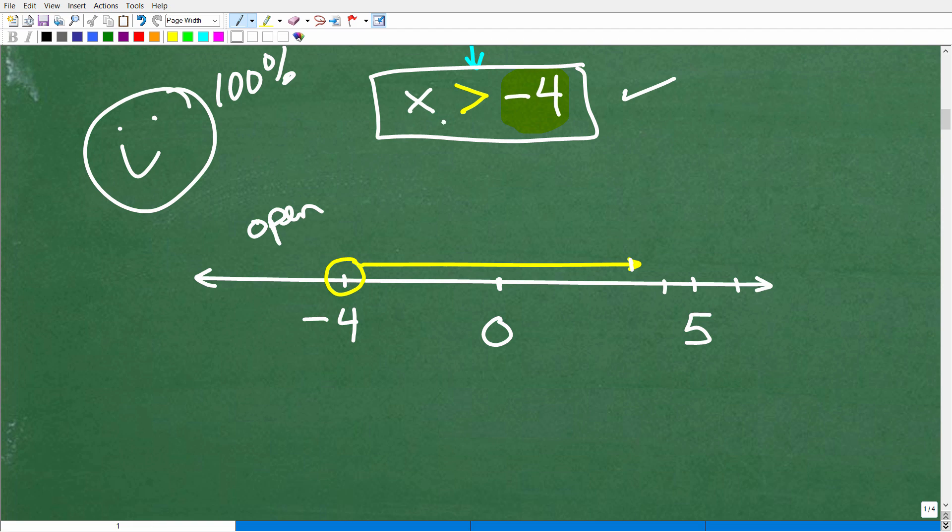Okay? Negative 4 is not a solution to this inequality. But if I had this inequality, all x's that are greater than or equal to negative 4, I would have the same graph, but instead of being an open circle, you would fill this circle in.